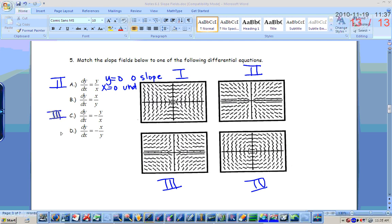And then B and D are kind of flip-flopped. You're going to have zero slopes when x is zero and undefined slopes when y is zero. But in the first quadrant on B, you should have positive slopes. And in the first quadrant on D, you should have negative slopes. Okay. Thank you. I'm good.